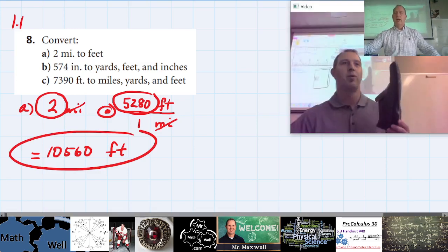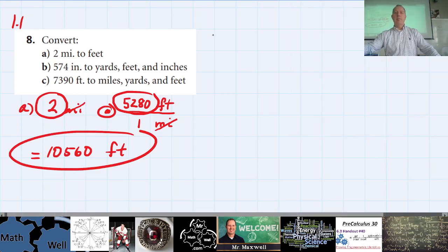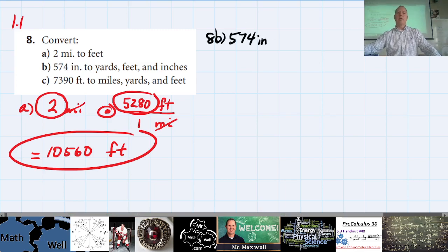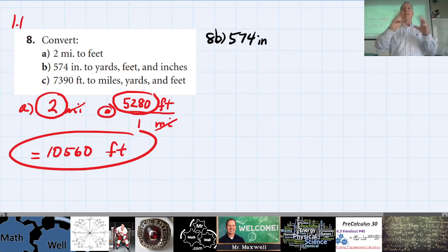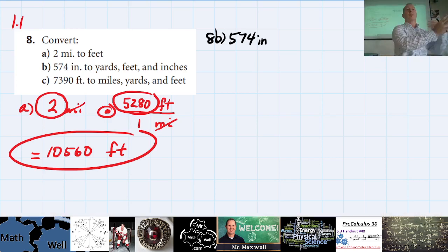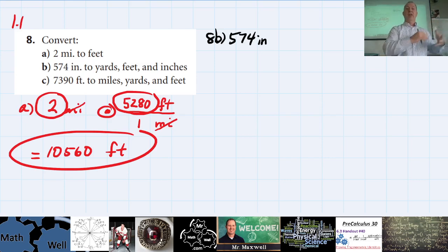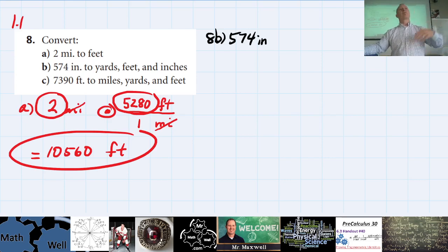Okay, so 8b is 574 inches and we want to convert that to yards, feet, and inches. What they're asking for is one combined measurement — like so many yards, then leftover feet, then leftover inches — not three separate values.